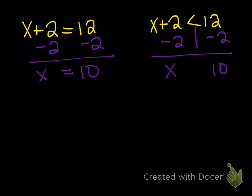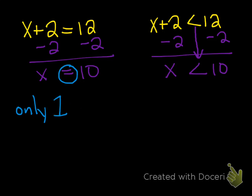You're going to take this inequality sign and just move it down. When you look at that, it's talking about the difference between an equation solution and an inequality solution. An equation solution — where you have an equal sign — there's only one solution. x can be 10 and only 10, because 10 is the only number you can add to 2 and get 12. But the inequality is saying x is less than 10, so any number less than 10, not including 10, will satisfy it.